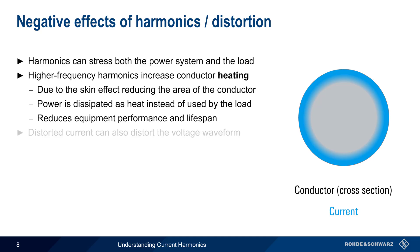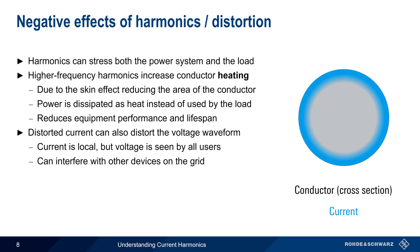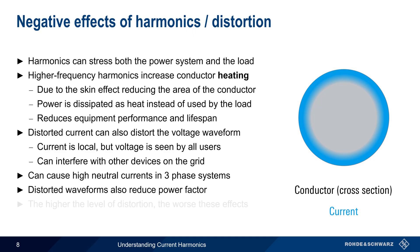Another consequence of harmonics is that the distorted current can also distort the voltage waveform. Current is local, so to speak, but disruptions to voltage waveforms are seen by all connected users or devices. In other words, current harmonics can lead to voltage disturbances that affect devices across the grid. As we'll see later in this presentation, certain harmonics can also create high currents in the neutral of three-phase systems. Another consequence of distorted waveforms is that they reduce power factor. In all of these cases, the higher the level of distortion, the worse these effects become.